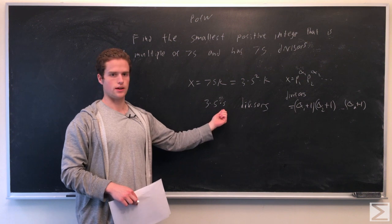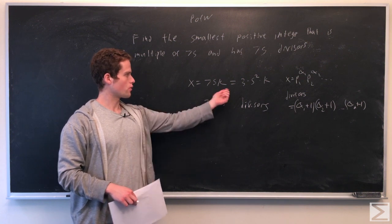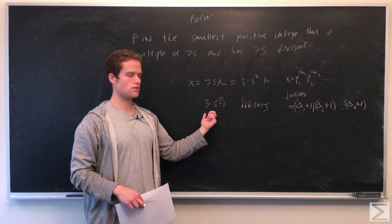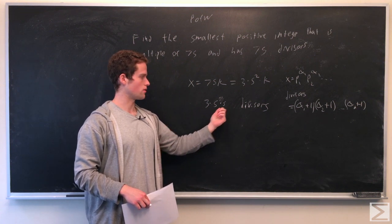75 divisors. So we already have two primes in x (3 and 5 from the multiple of 75), so we're going to either have two or three prime factors corresponding to the factorization of 75.